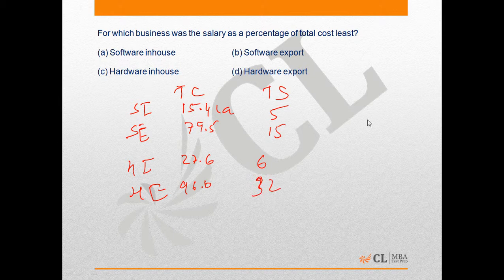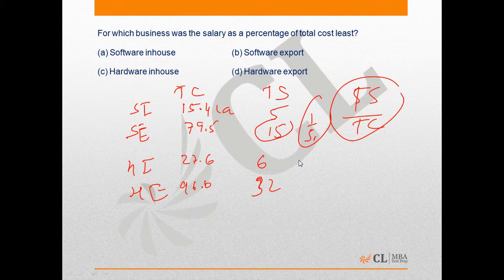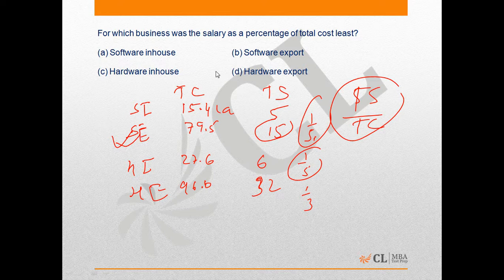Now we have to see for which product the ratio of total salary to total cost is the least. For software in-house this is approximately one-third. For software export it is slightly less than one-fifth. For hardware in-house it is slightly more than one-fifth, and for hardware export it is around one-third. So the ratio is least for software export, which means option B is the correct answer.